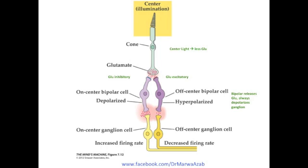If this reduction in glutamate is synapsing on the off-center bipolar cell, because it's typically excited by glutamate, this will lead to hyperpolarization of the off-center bipolar cell, which means less glutamate is released onto the next cell — the off-center ganglion cell — therefore a decreased firing rate and less action potentials sent to the brain.